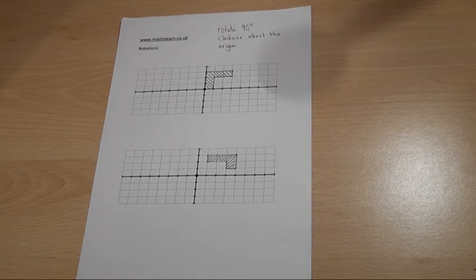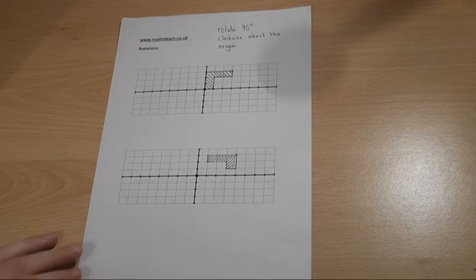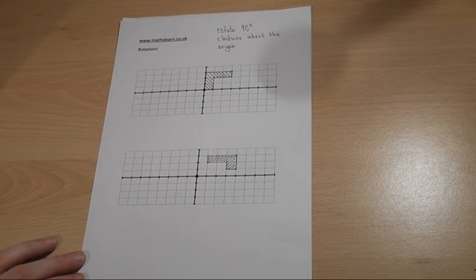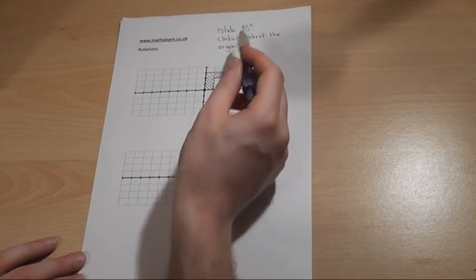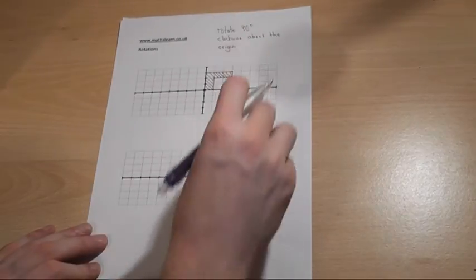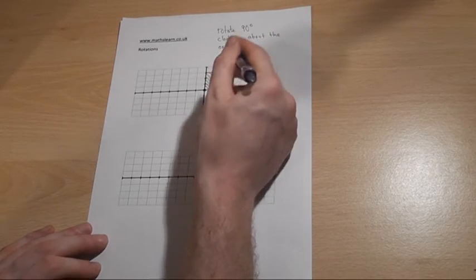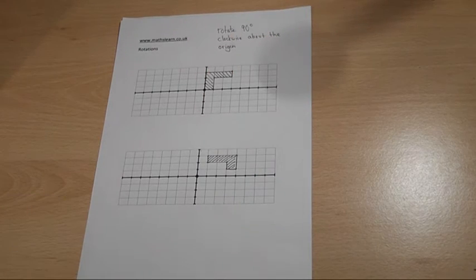Many students find rotations quite difficult, and I just want to rotate these two shapes 90 degrees clockwise, which means that way, about the origin. Now this just needs very careful visualization.